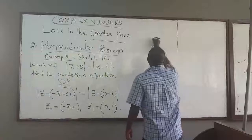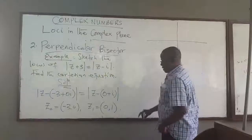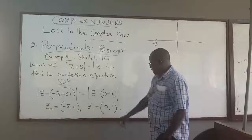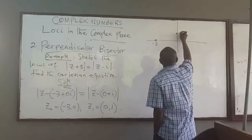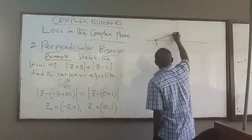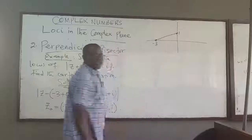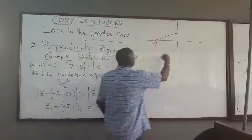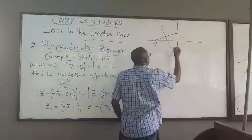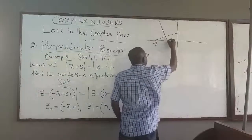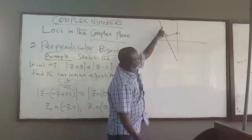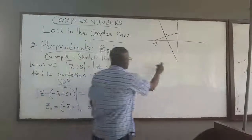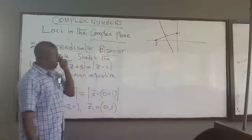So basically, the locus of this point would be the perpendicular bisector of the line joining these points. Let's sketch these points. I'm going to have negative 3 — let's say negative 3 is here at 0 — so that is this point. And then this is 0, 1, so 0, 1 would be that point. So there's a line connecting these two points. That line is not the locus. The locus is the bisector of that — the line that cuts this into two. This should be a straight line like that. This is the locus of points represented by this equation.